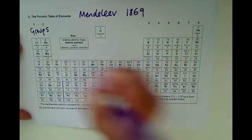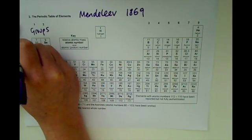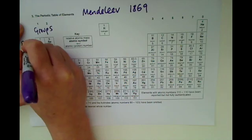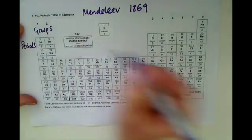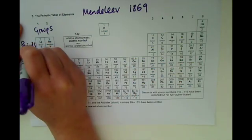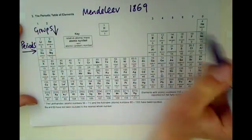The rows of the periodic table aren't called rows, they are called periods. Hence the periodic table. So the rows are called periods going across and the columns are called groups.